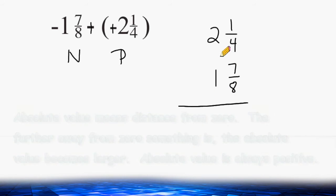Now one thing we should notice before we subtract is that 7 eighths is too large to take away from 1 fourth. So what we're going to do is rename both of these mixed numbers as improper fractions. 2 and 1 fourth can be renamed as 9 fourths and 1 and 7 eighths can be renamed as 15 eighths.